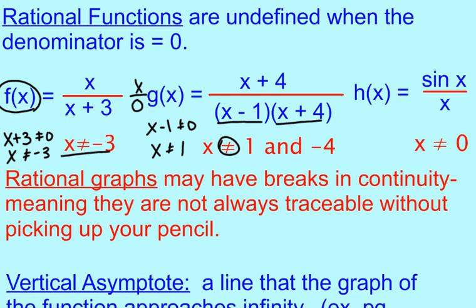And it also cannot equal negative 4. And then in our third example, h of x, it says the sine of x divided by x. So x, because it's just an x down here, x can't equal 0. So any other value for x would be fine, but x cannot equal the numbers that we list there.